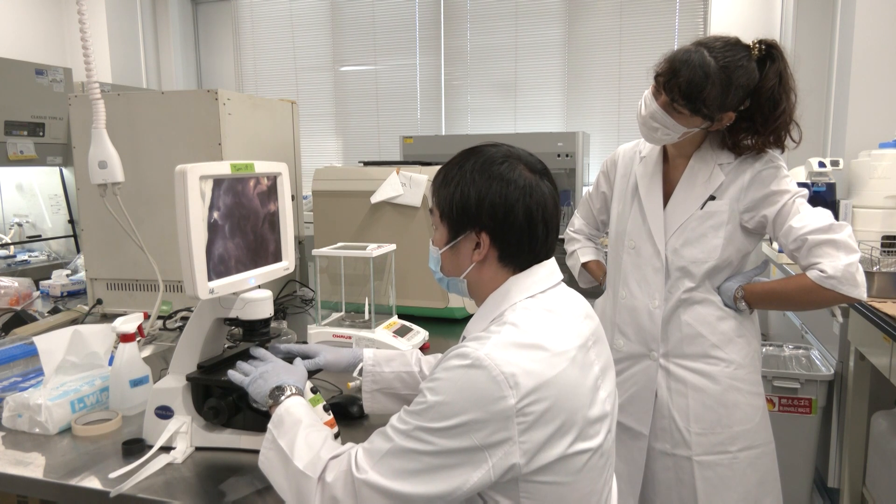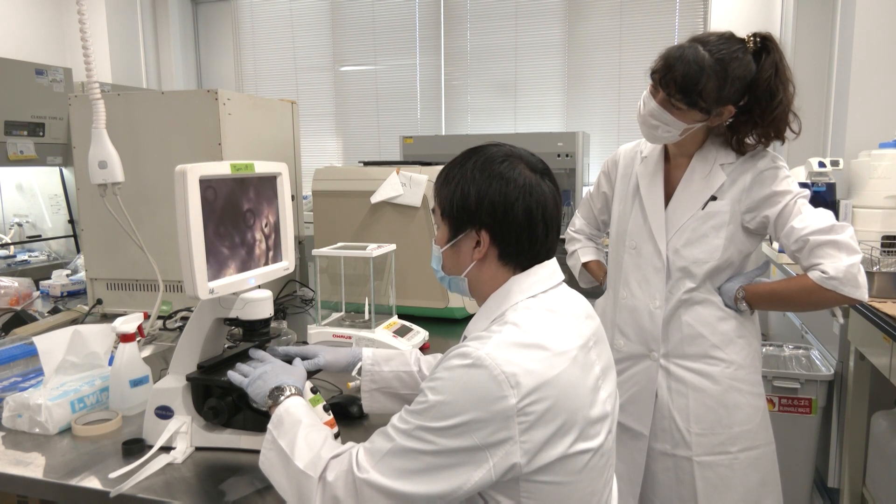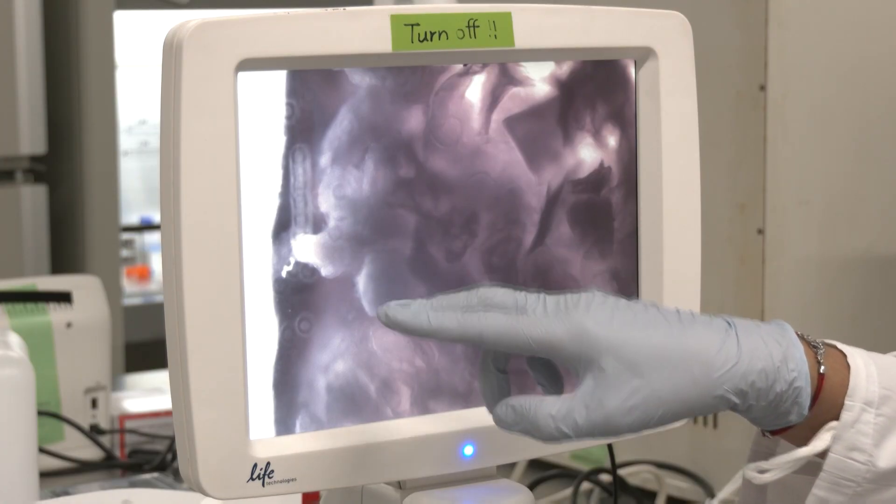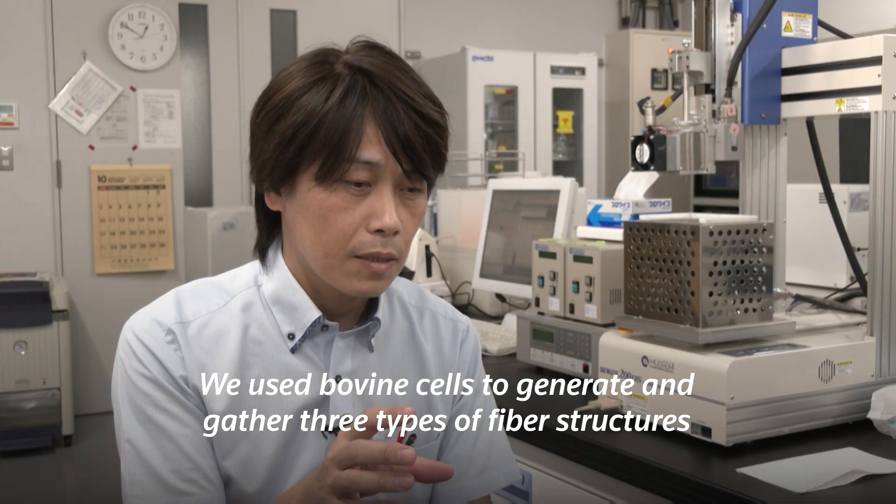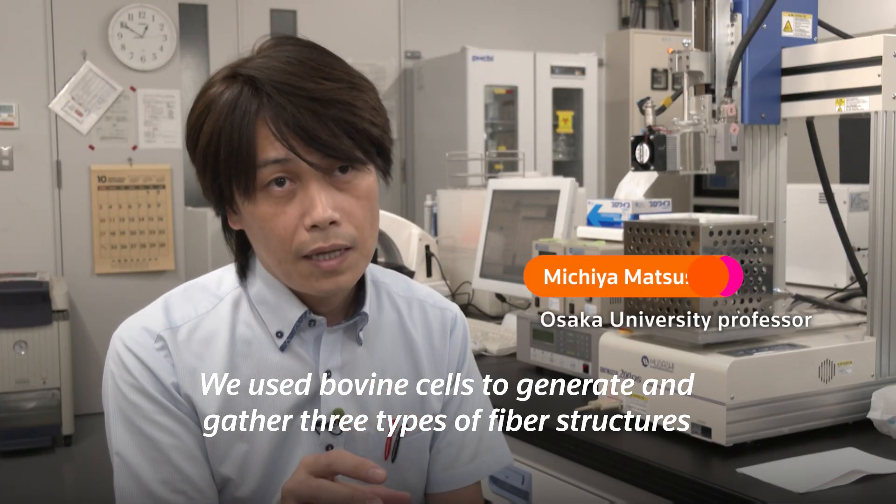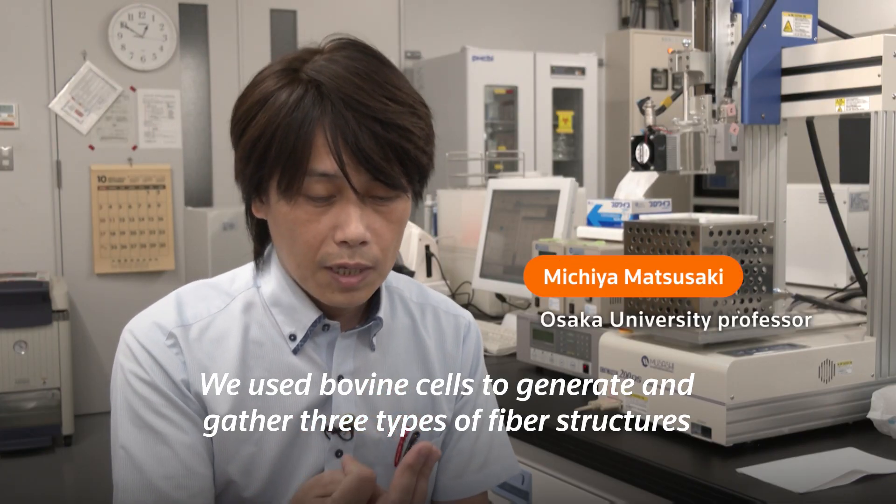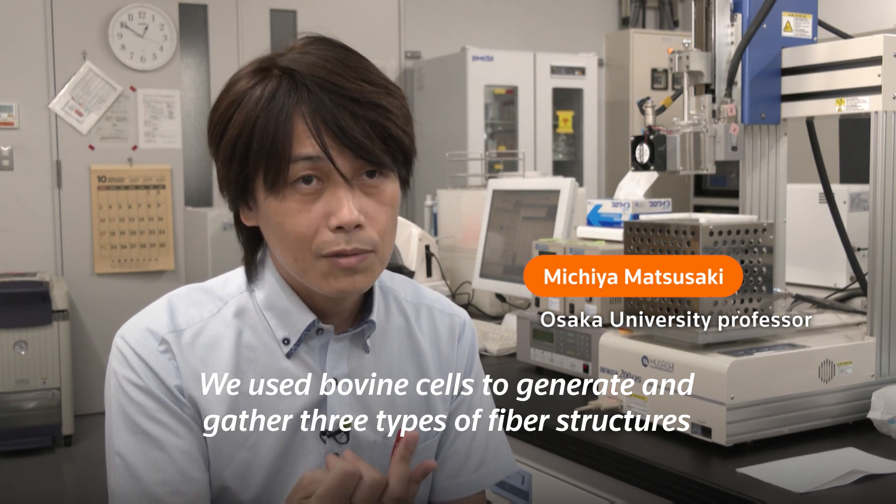Professor Michiya Matsusaki and his research team first extracted bovine cells from Japanese black cows and manually pieced the fibers together to create the meat. They use three types of cells, including fat and muscle cells.